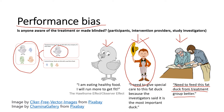Performance bias deals with the question: is anyone in these three groups — participants, intervention providers, or study investigators — aware of the treatment, or are they made blinded?